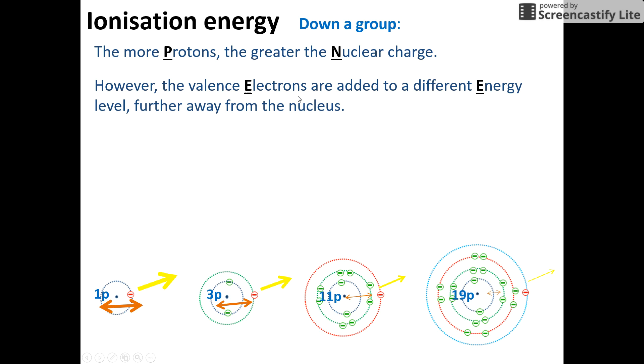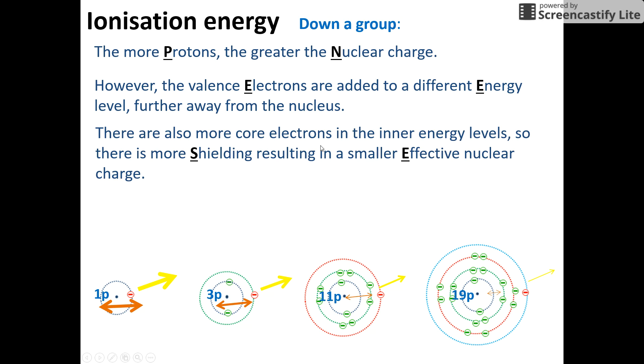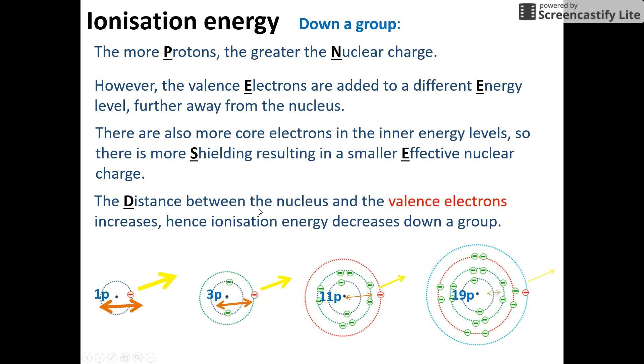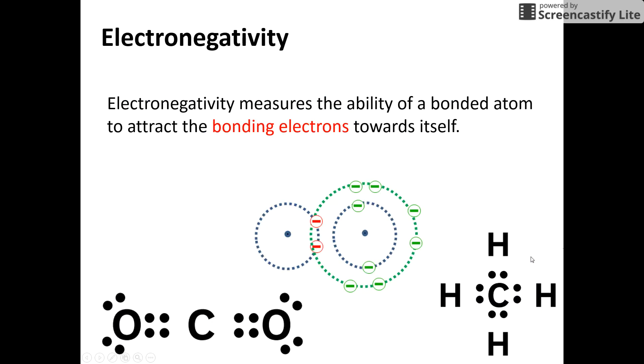But my electrons are being added to an energy level further away from the nucleus. And remember, distance has a big effect on that force of attraction. If you watched the previous video, I've also got more shielding. They have only got two electrons that are repelling, causing repulsion between that electron and the nucleus. Here I've got 10, here I've got 18. So there's more repulsion. So my effective nuclear charge is a lot less. And because of that distance being so much greater, my ionization energy is going to decrease. It's going to be easier and easier to remove an electron.